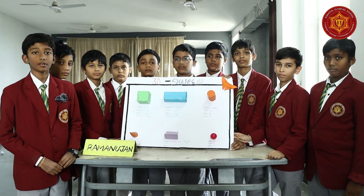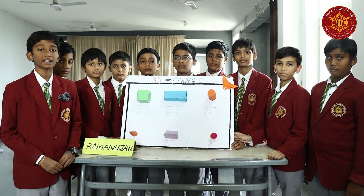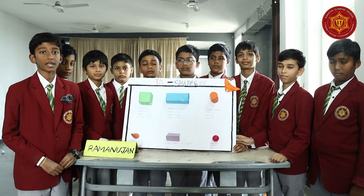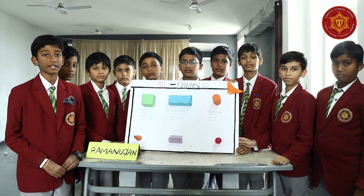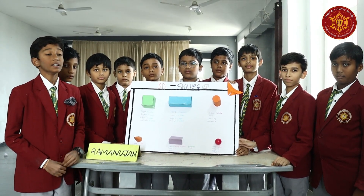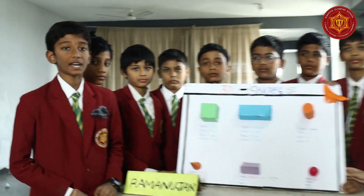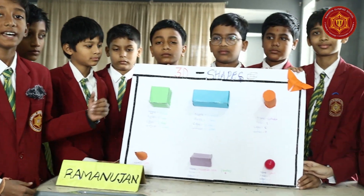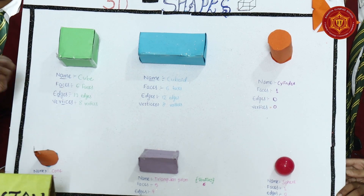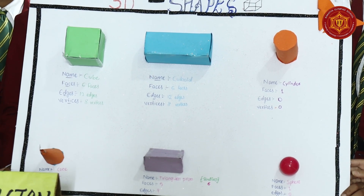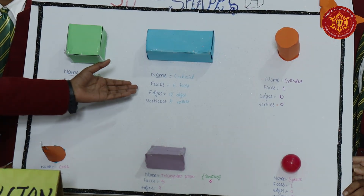Hello everyone, myself, I am Manush. I am studying in the 6th standard of KOS, Yamuna campus. Today we completed an activity named 3D shapes. These 3D shapes are different from 2D shapes. Let me explain about those. First one is a cube. It has 6 faces, 12 edges and 8 vertices.